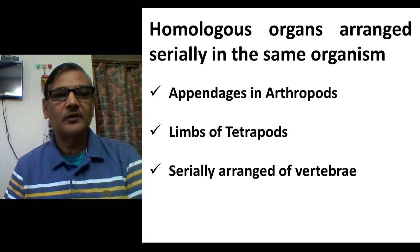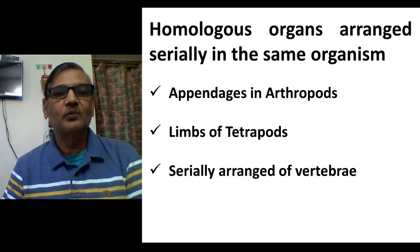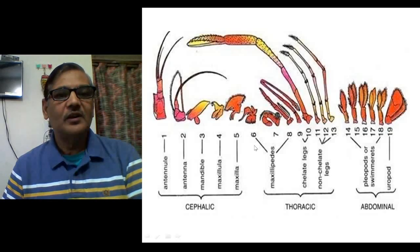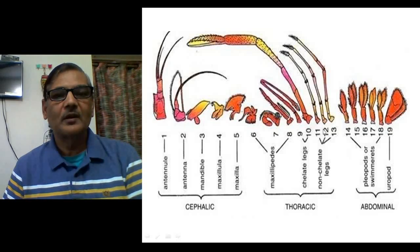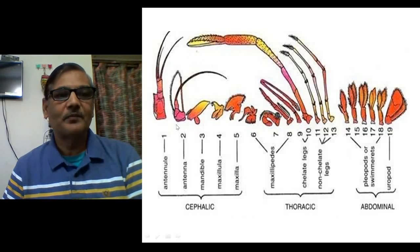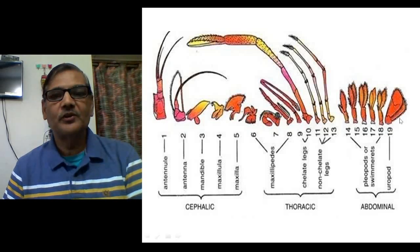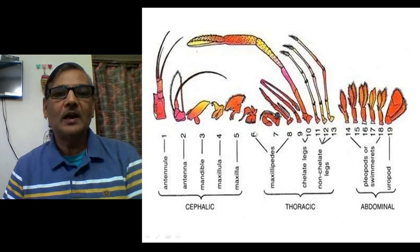Examples include appendages in arthropods, limbs in tetrapods, and serially arranged vertebrae in vertebrates. Taking up these examples one by one: in this figure you can see the appendages of Palimmon — that is, prawn — which possesses 19 pairs of appendages. These appendages are arranged serially from anterior to posterior end and can be differentiated as cephalic, thoracic, and abdominal appendages.